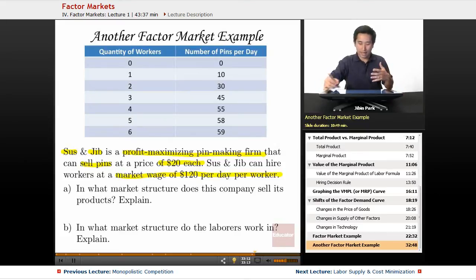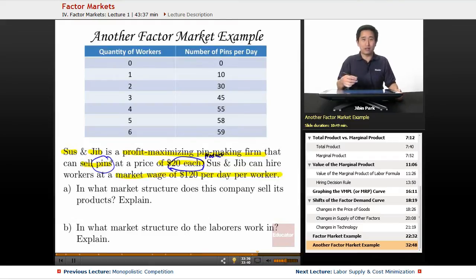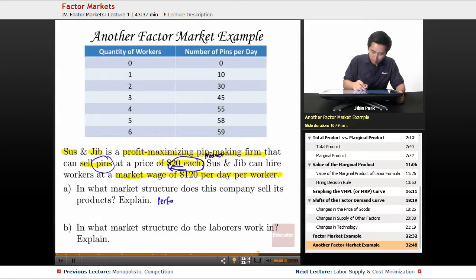The first question doesn't really have anything to do with the numbers. Sometimes they'll throw a bunch of numbers at you, and the question is testing whether you understand the economics rather than just manipulating numbers. What market structure does this company sell its product in? They're selling at $20 each, so this is the product market. The final product is sold in the product market. If you're selling at $20 each, it's perfectly competitive—because price is the same, there's no differentiation, so you have no control over price.